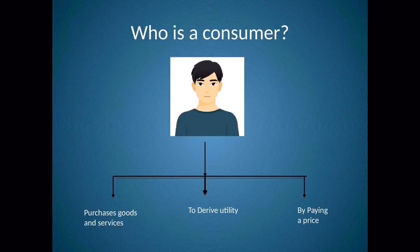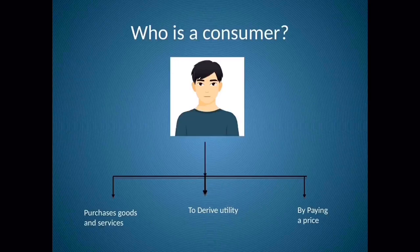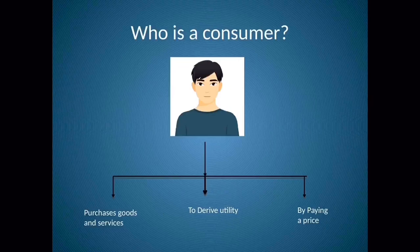With the advancement of technology, it has become very easy for the consumer to directly communicate with the seller. But this was not the case, say, four or five decades ago. So there were a lot of happenings in the market which led to the exploitation of the consumer. Here we need to understand what the position of a consumer in the market is, what activities are taking place, how it affects the consumer, and what steps can be taken in case he faces any malpractices on the part of the producer or the seller.